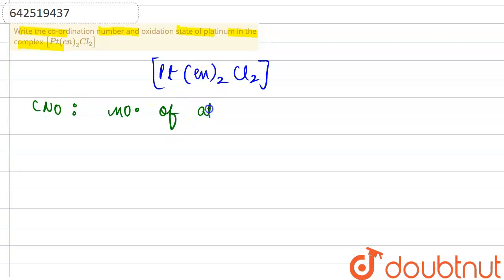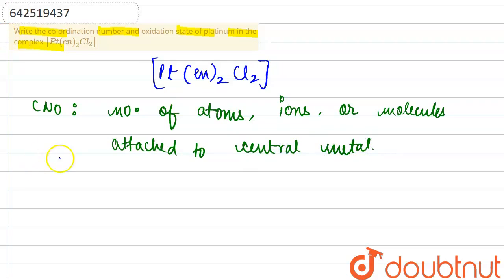It is the number of atoms, ions or molecules attached to the central metal atom. In the given complex, platinum is the central metal.